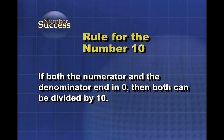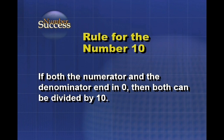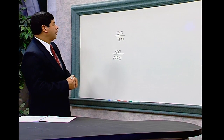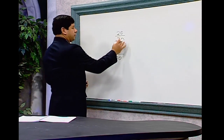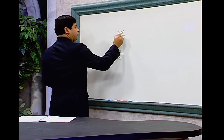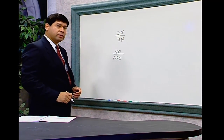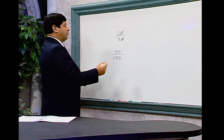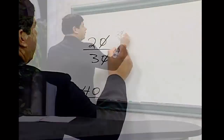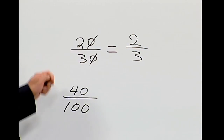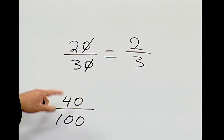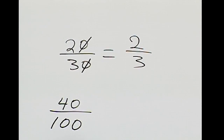Rule for the number 10: if both the numerator and the denominator end in 0, then both can be divided by 10. The example is 20 over 30. One quick way is to just cross out the zeros — you're really dividing by 10. This reduces to 2 thirds. 20 divided by 10 is 2, and 30 divided by 10 is 3.